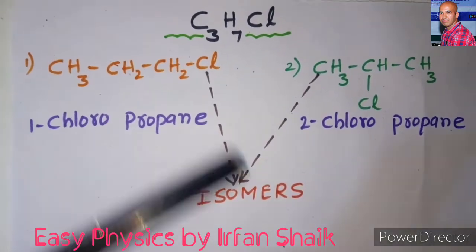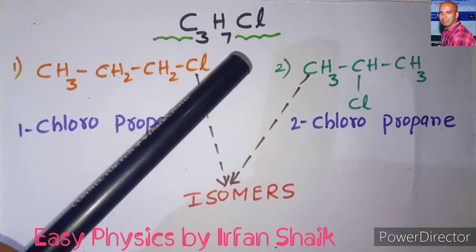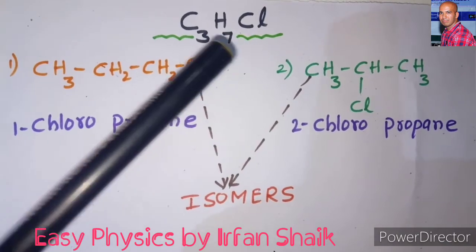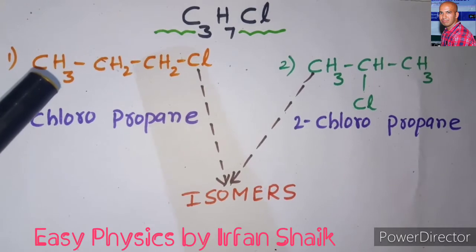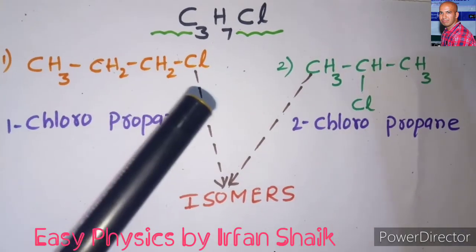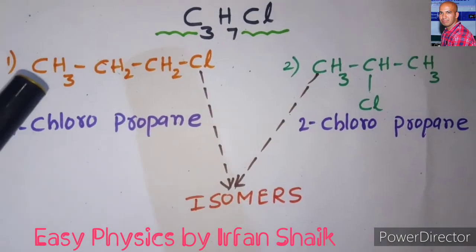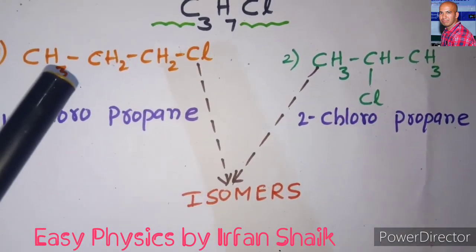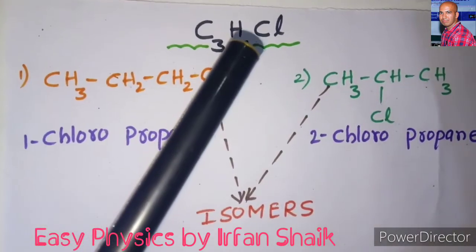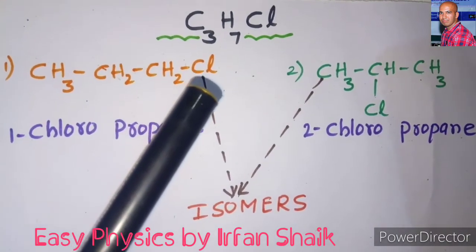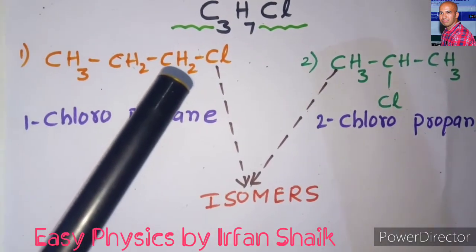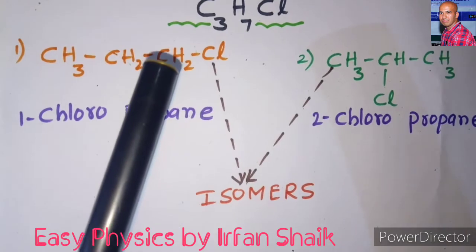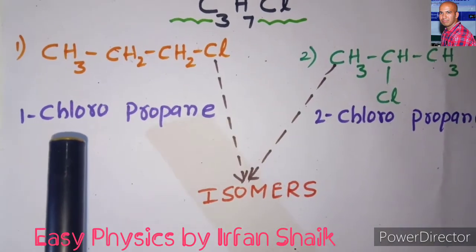Let us take one more example: C3H7Cl, which means 3 carbon atoms, 7 hydrogen, and 1 chlorine atom. The first structure is CH3CH2CH2Cl. In this structure we also have 3 carbon atoms, and 3 plus 2 plus 2 gives 7 hydrogens, plus 1 chlorine. The chlorine is placed at the last carbon, so this structure is called 1-chloropropane, because the chlorine is attached to the first carbon atom.